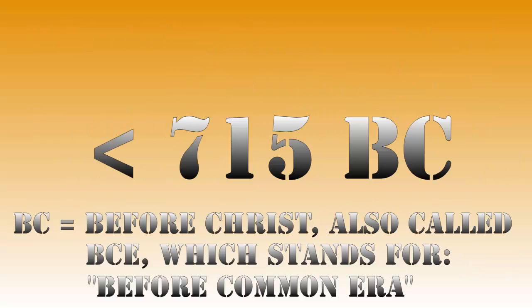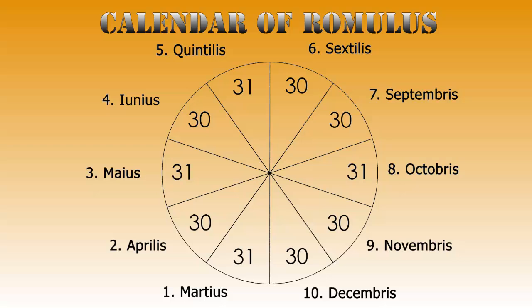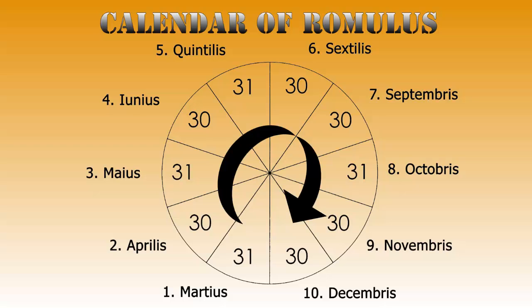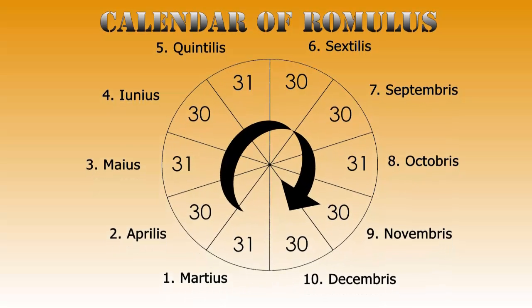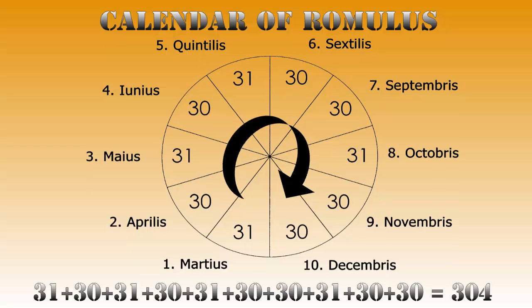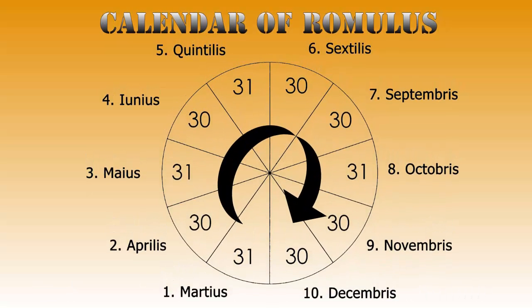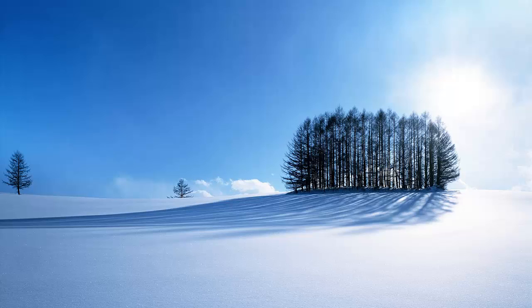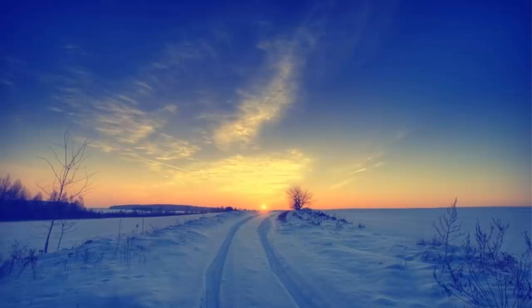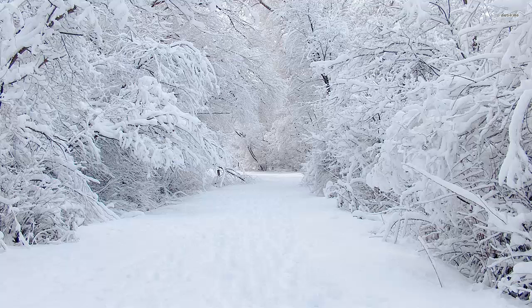Before 715 BC, the calendar of Romulus was used. This calendar had 10 months of 30 or 31 days, making for a total of 304 days. Obviously, this meant that it didn't account for all days of the year, and yes, they did realize that at the time. The other 61 days just didn't need a month. Back then, the calendar was used as a timetable for knowing when to plant and harvest the crops. Since these 61 days were winter, and thus basically useless to the people that used the calendar, they just didn't bother naming them.